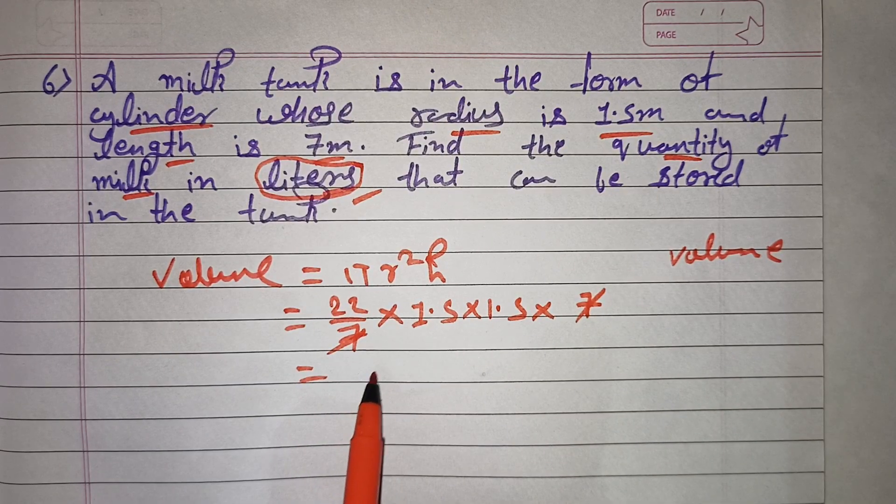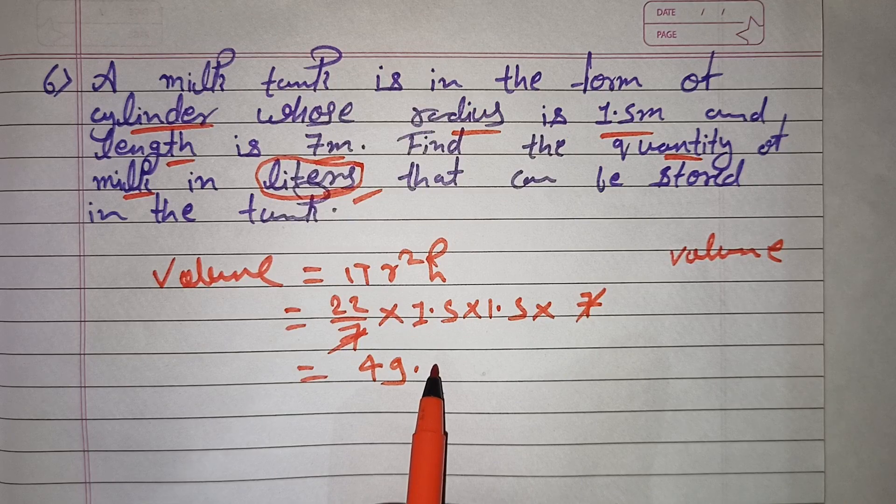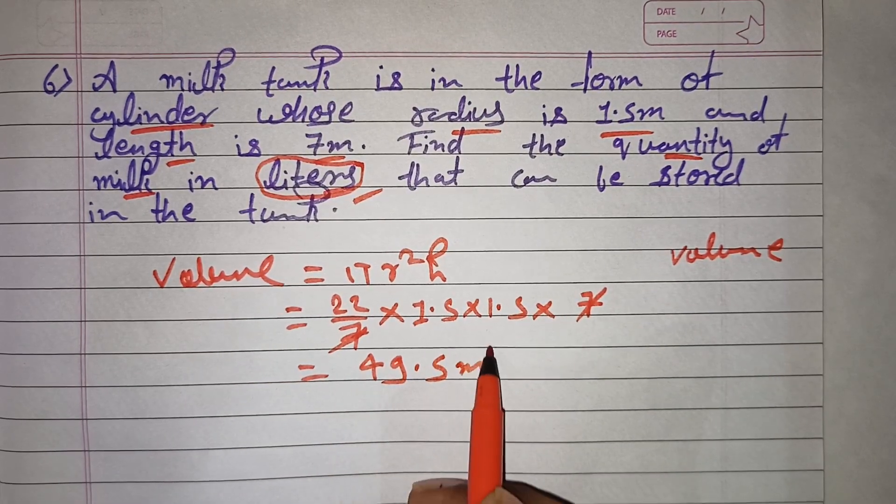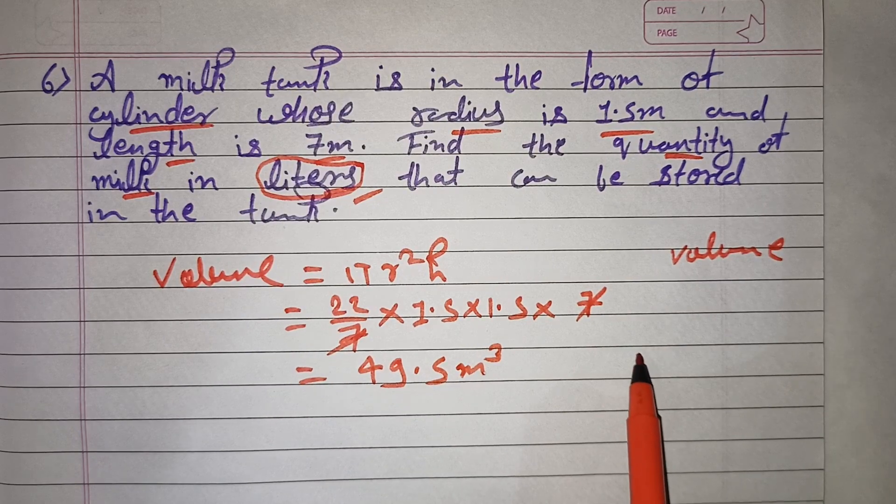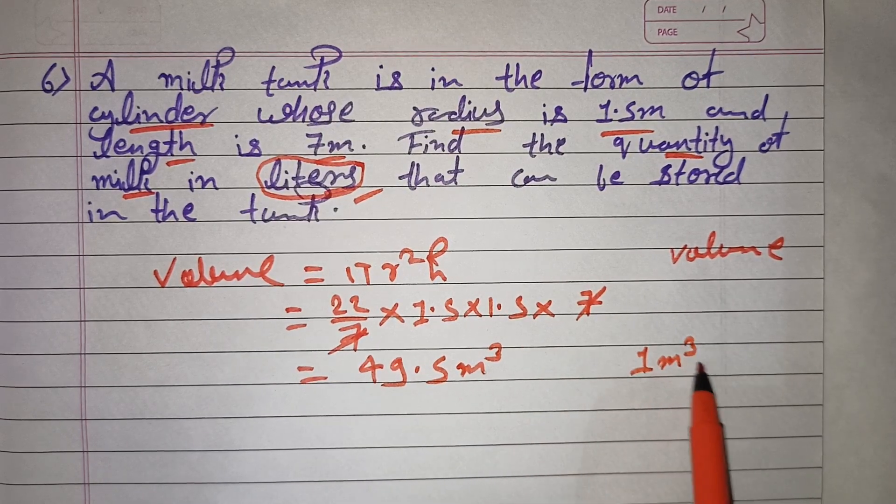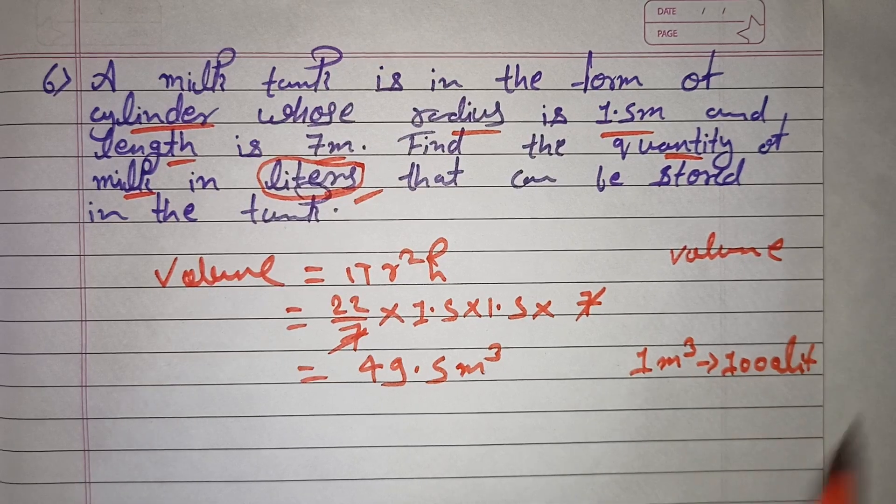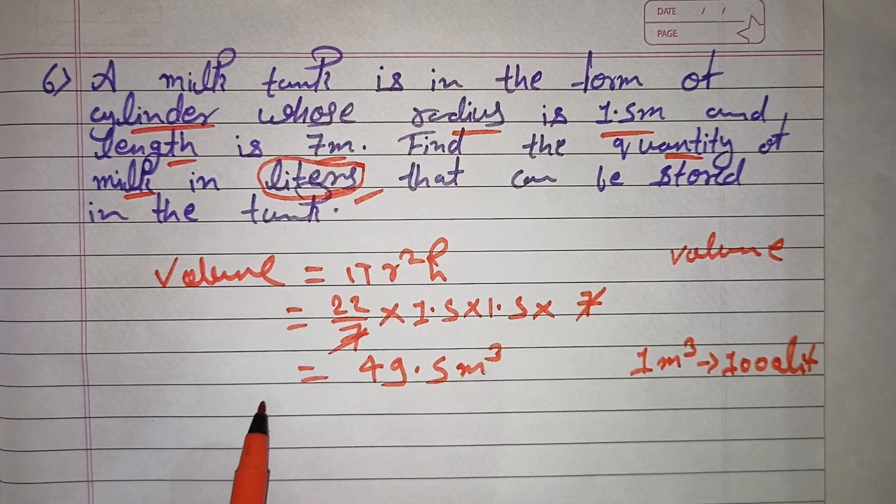The final multiply result is 49.5 meter cube. Now I will tell you that 1 meter cube equals 1,000 liters.